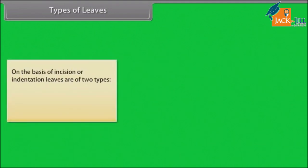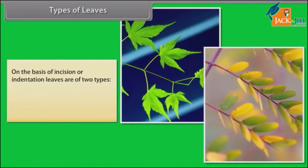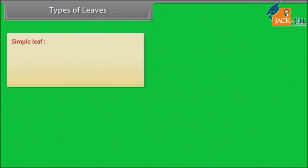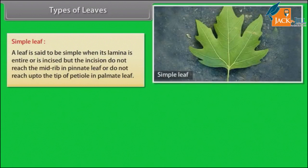On the basis of incision or indentation, leaves are of two types: simple leaf and compound leaf. A leaf is said to be simple when its lamina is entire or is incised, but the incisions do not reach the mid-rib in a pinnate leaf, or do not reach up to the tip of the petiole in a palmate leaf.